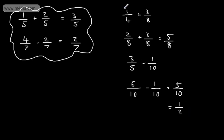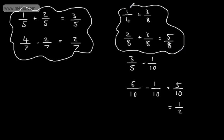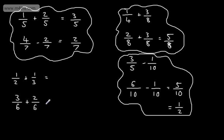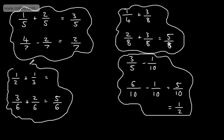Sometimes we might need to change both fractions. For example, if I had 1 half plus 1 third, we need a common denominator. We look to see which is the first number that both 2 and 3 go into. The first number 2 and 3 both go into is 6. So if I change this into 6s, I need to multiply the numerator by 3 and the denominator by 3, giving the equivalent fraction 3 over 6. If I change the other fraction into 6s, I multiply the numerator and denominator by 2, giving me 2 over 6. So we have the same denominator. 3 plus 2 is 5, so we end up with 5 over 6.